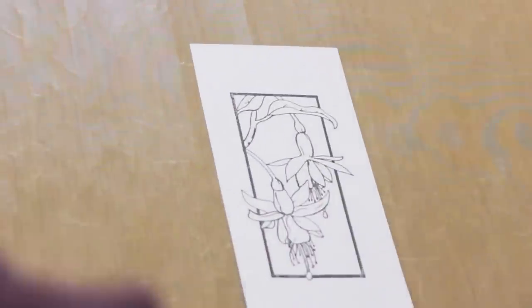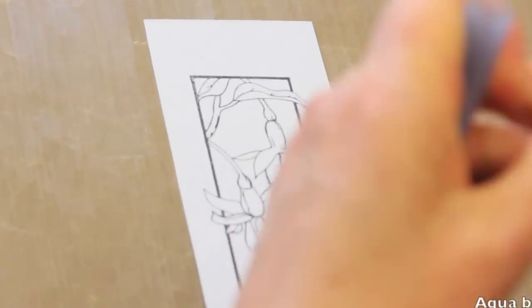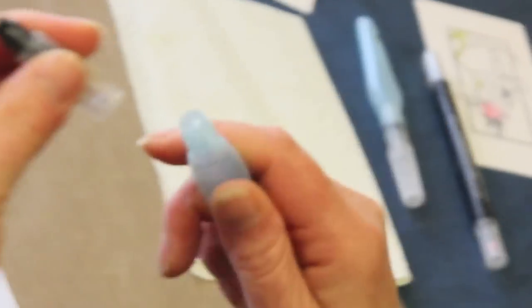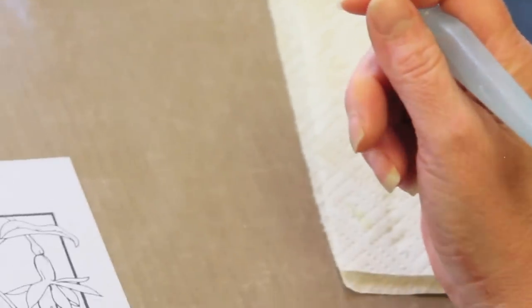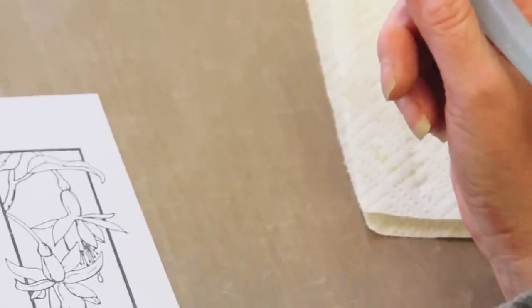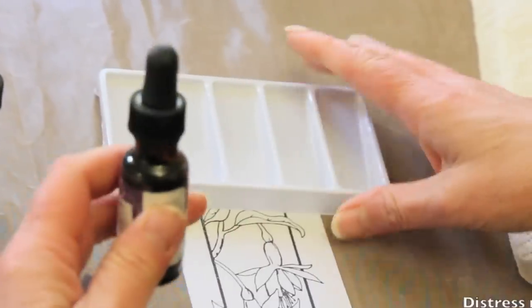I use an aqua brush—they're brilliant. This unscrews, you fill that with water, and it's just like coloring with a watercolor brush but you don't need the tub of water there. There's water running through it. What ink am I going to use? For this one I think I'll show you using the distress re-inkers.